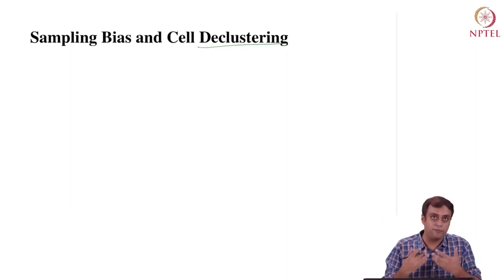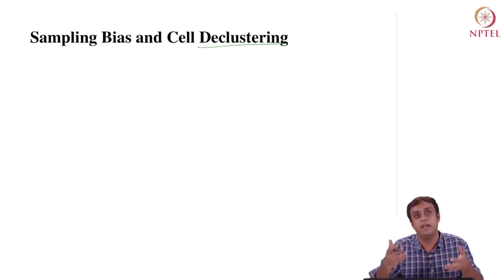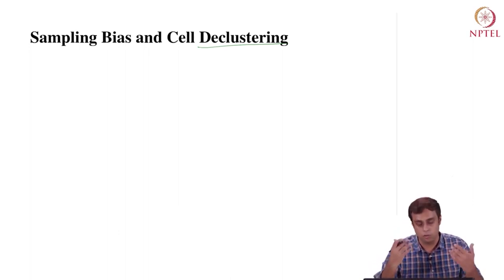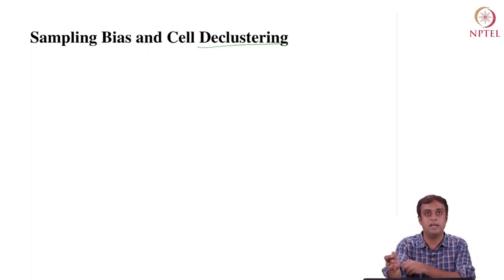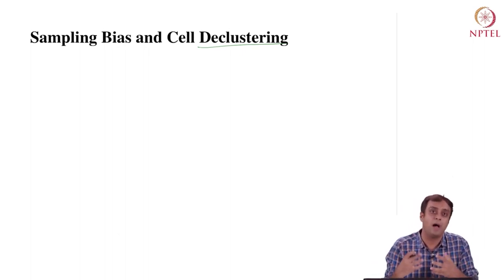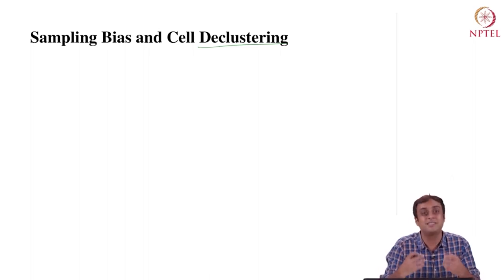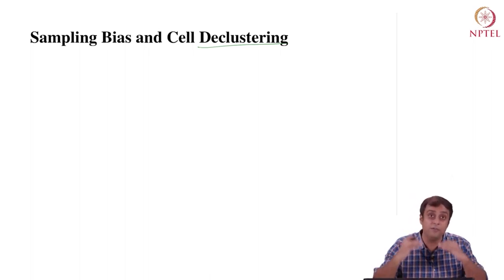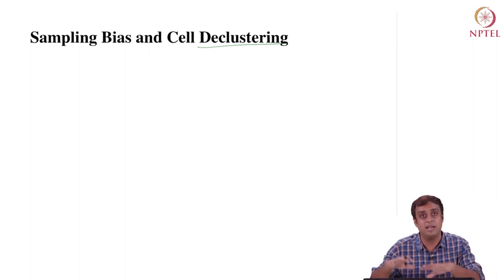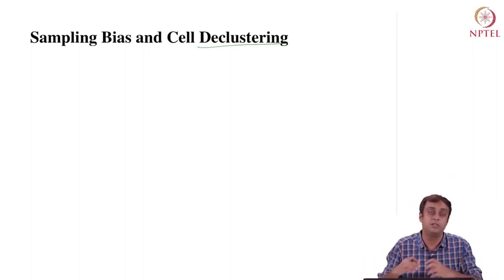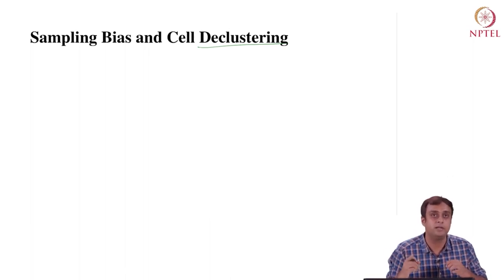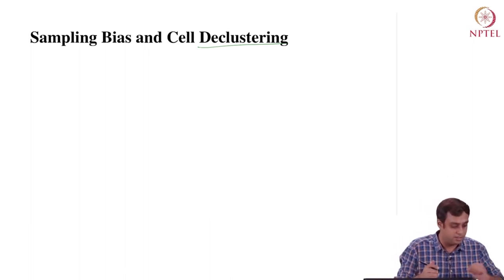Let me go through the idea of sampling bias and cell declustering, then apply it to this data before moving forward with the analysis. I cannot proceed with the analysis until I have applied cell declustering to this real-world dataset. This is an extra intervention that this real-world dataset demands.